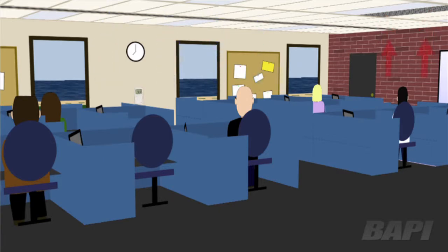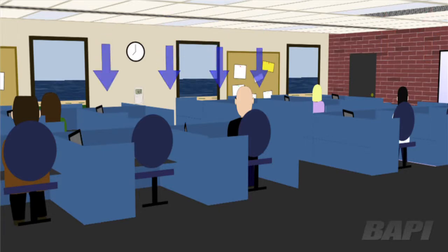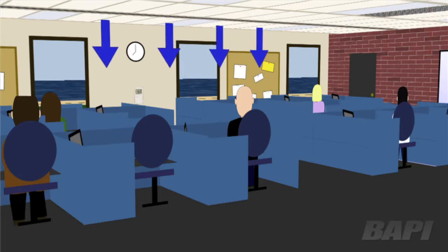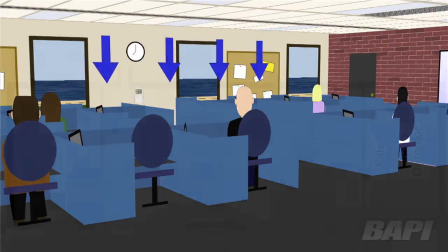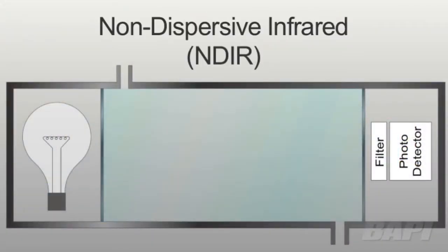Therefore, utility costs can be lowered by only bringing in fresh air when people are in the room and the concentration of CO2 increases. Most CO2 sensors used for demand control ventilation are known by the engineering term non-dispersive infrared, or NDIR.